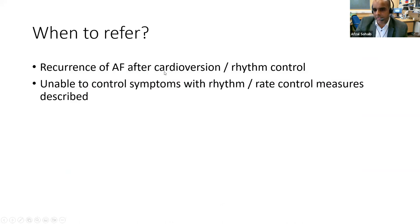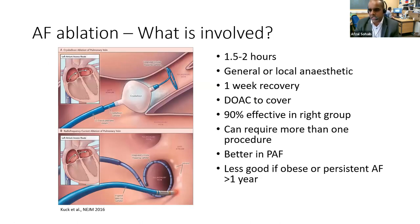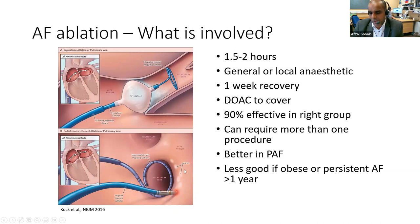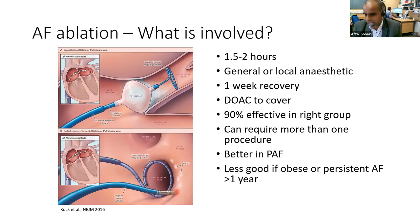When to refer: recurrence of AF after cardioversion, inability to get on top of symptoms with medications, or if other rhythm control procedures like ablation are needed. AF ablation involves putting catheters into the left atrium via the femoral vein and either inflating a cryoballoon to freeze the four pulmonary veins, or using radiofrequency to spot-weld around the pulmonary veins — electrically disconnecting them from the atrium. In paroxysmal AF this is a very effective procedure, over 90% effective in the correct group. It's less effective in persistent AF and much less effective in obese patients — once BMI is above 35 there are significant restrictions on funding.